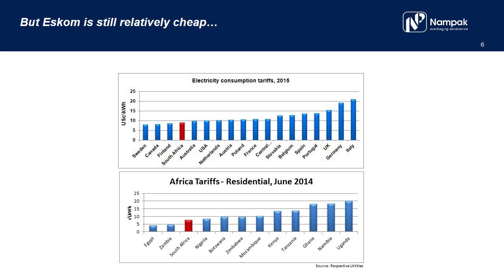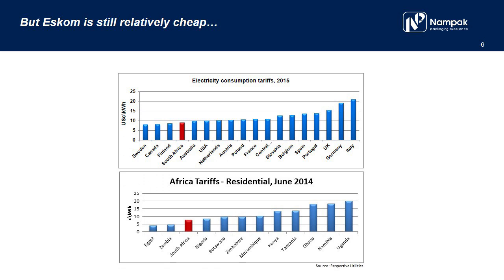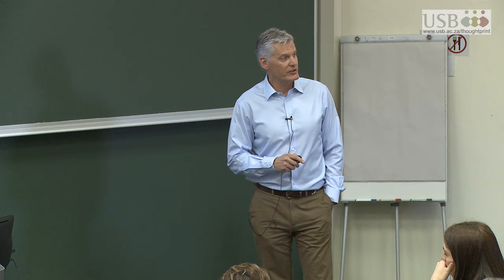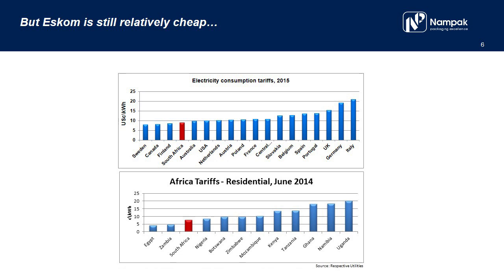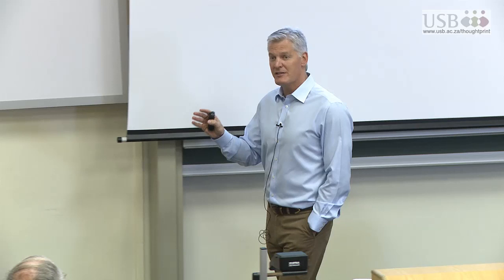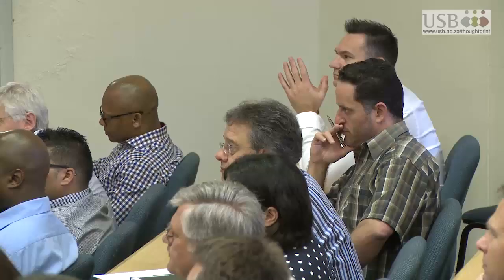Eskom is getting very expensive. If you compare us with the rest of the world in terms of what we pay for electricity — and this is in 2015, so these are recent numbers — that is where South Africa lies. Think back to the McKinsey graph that I showed you at the beginning and the position that Germany occupied. Look at what Germany pays for electricity. And yet, up until very recently, Germany was the biggest exporter of manufactured goods in the world.